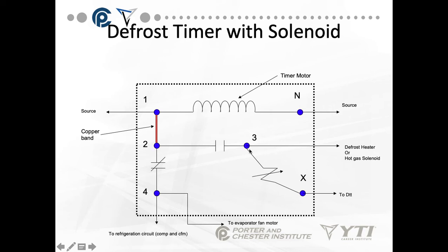Between pins 2 and 3 there's a normally open contact — meaning we're not in defrost. Between pin 2 and 4 we have a normally closed contact, meaning when we're not in defrost, this is a closed circuit between 2 and 4. Pin 3 goes to the defrost heater or hot gas solenoid. Pin 4 goes to the refrigeration circuit: compressor, condenser fan motor, and evaporator fan motor.